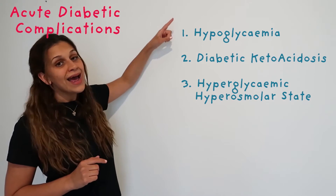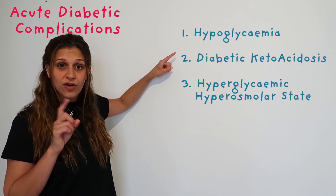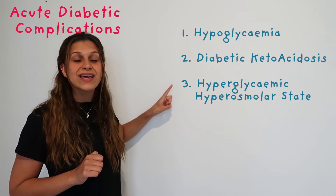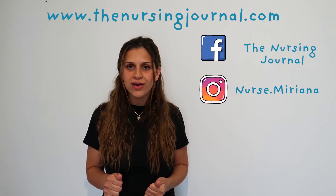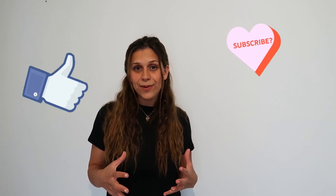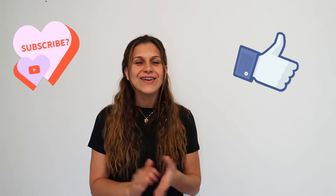Those are the three main acute complications of diabetes. Quick recap: number one, hypoglycemia — low blood sugar. Number two, DKA — ketones from fats make your blood acidic. Number three, HHS — causes your patient to urinate excessively and become dehydrated. I will make another video on the chronic complications. In the meantime, check out my blog thenursingjournal.com for all the study notes and cheat sheets. Subscribe, hit like, and follow me on social media — thank you and happy studying!